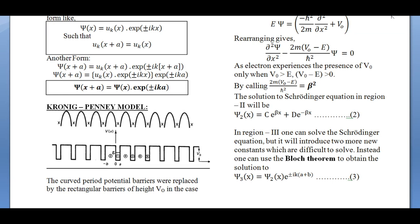Now let us analyze the situation using the Kronig-Penney model. The Kronig-Penney model is basically the application of Bloch's theorem to a particle inside a periodic potential. These curves are the original potential. As it is not possible to solve the Schrödinger wave equation with these curves, they have been replaced with rectangular barriers, making it a one-dimensional problem that can be divided into several regions and is mathematically easy to solve.